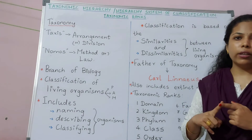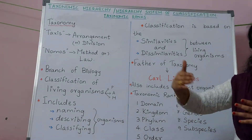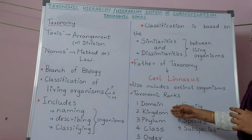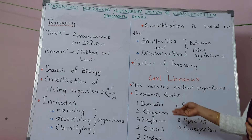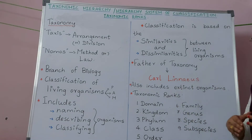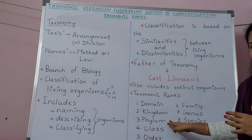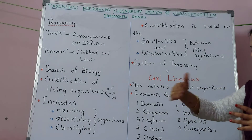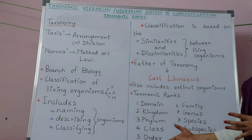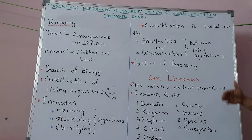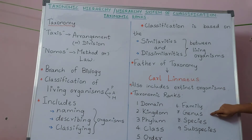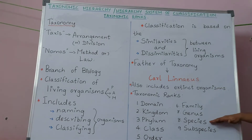The kingdom is more specific compared to a domain, and kingdom can again be subdivided into phylum. Phylum can be categorized into classes, classes can be divided into orders, orders into family, and family into genus. Genus includes more than one group of organisms.